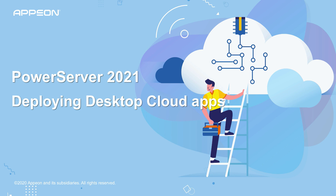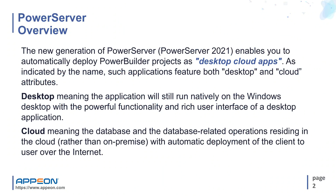This video introduces the new version of PowerServer and how the major improvements Appian has made to the product will drastically accelerate moving your PowerBuilder projects to the cloud as desktop cloud apps. The new generation of PowerServer, PowerServer 2021, enables you to automatically deploy PowerBuilder projects as desktop cloud apps.